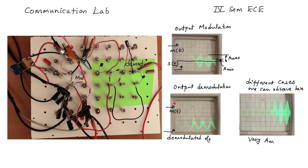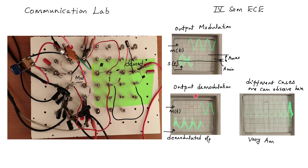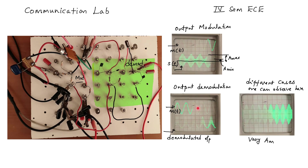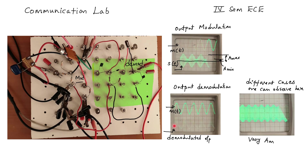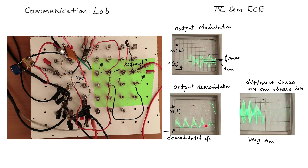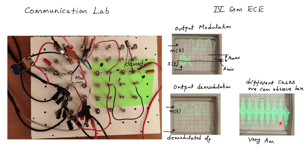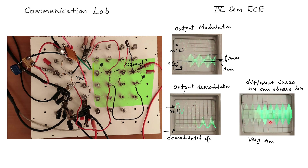This is the output of AM detection where the envelope detector is used. This is the message signal applied at the input of the modulator, and this is the reconstructed signal. This portion of the CRO is showing different cases of modulation.